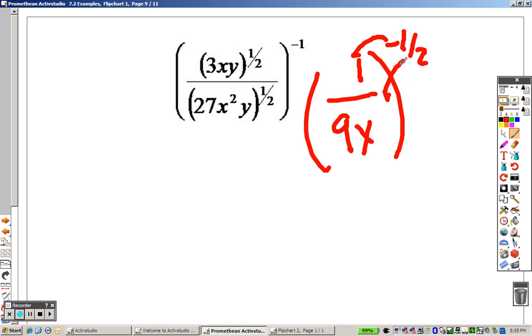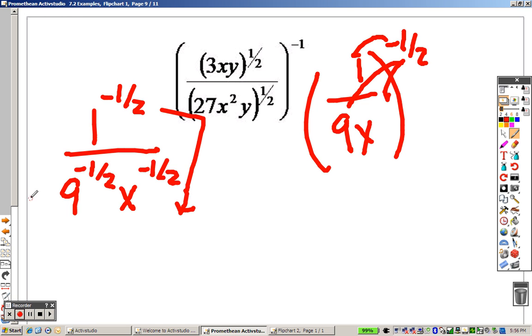And I also have to remember that it goes through to this as well. So, I really am looking at 1 to the negative 1-half over 9 to the negative 1-half x to the negative 1-half. So, all the negatives I have to flip-flop, which means that goes down below. So, that goes up, and that also goes up.